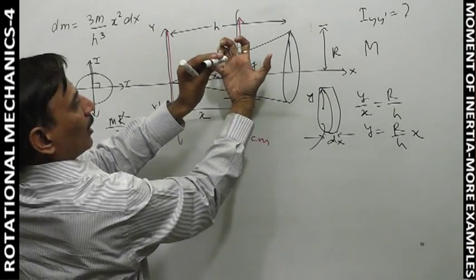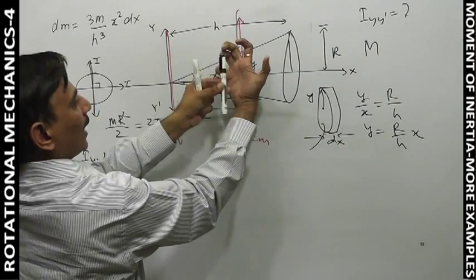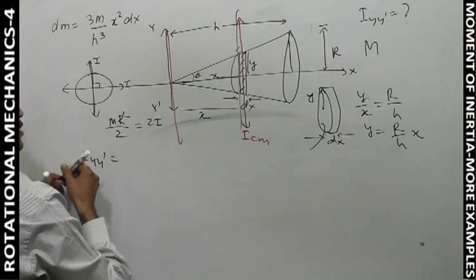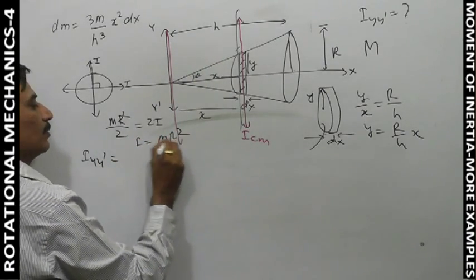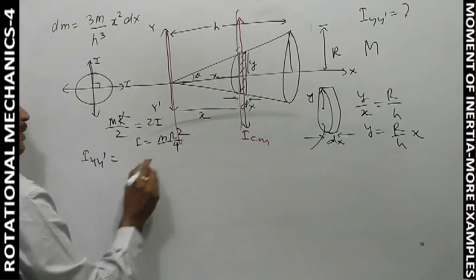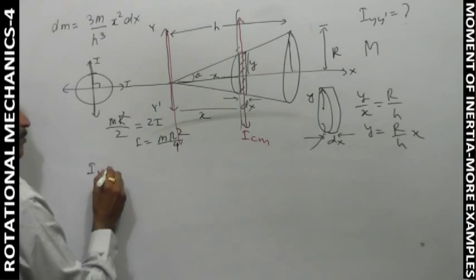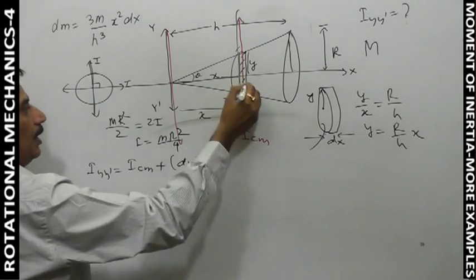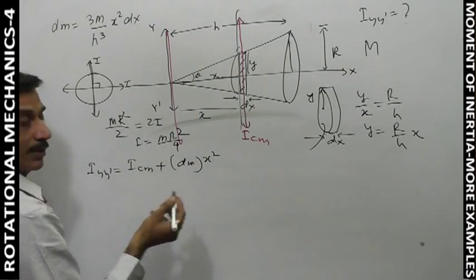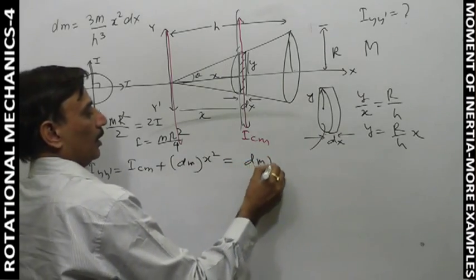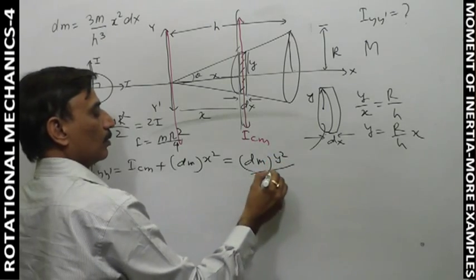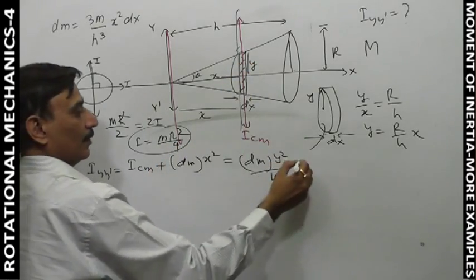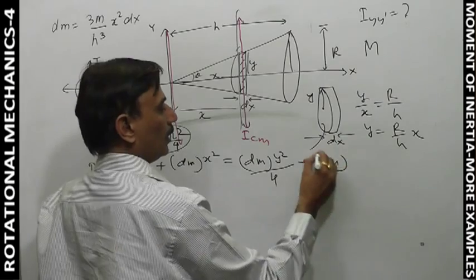By symmetry, i and i are the same. i plus i equals mr²/2 (perpendicular axis theorem for a disc). So 2i = mr²/2, which gives i = mr²/4. So the moment of inertia of the disc about its diameter is mr²/4. Therefore, Iyy' = Icm + dm·x².